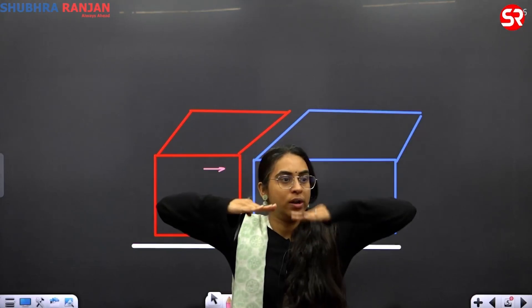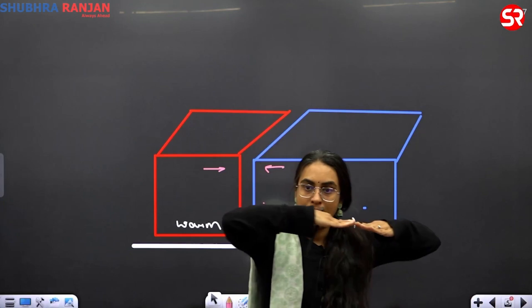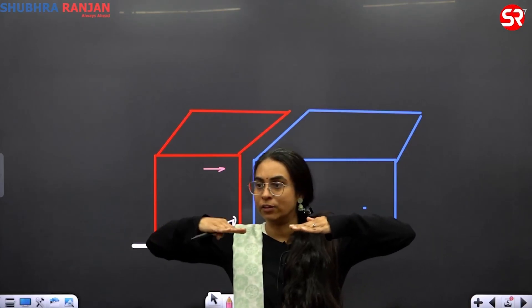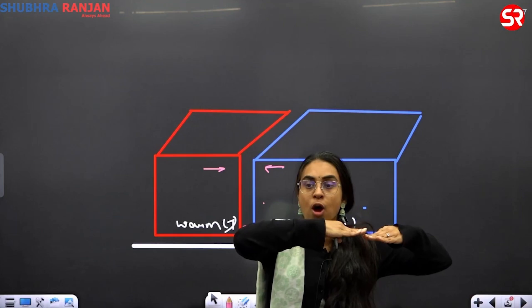Warm air mass and cold air mass — both standing facing each other. They are not interacting. Nothing will happen unless one moves. One has to move into the other's territory. When the warm air mass moves into the territory of the cold air mass, you call it a warm front.